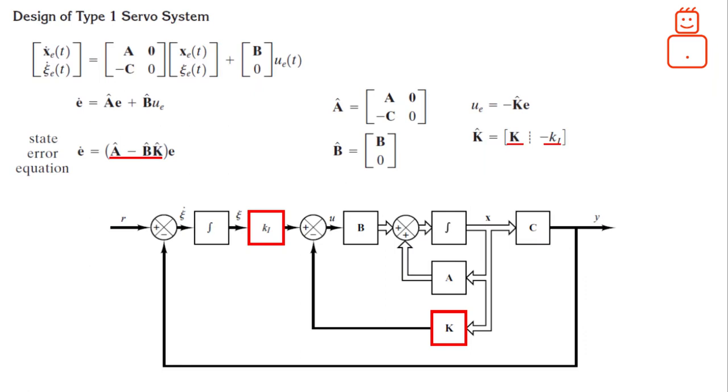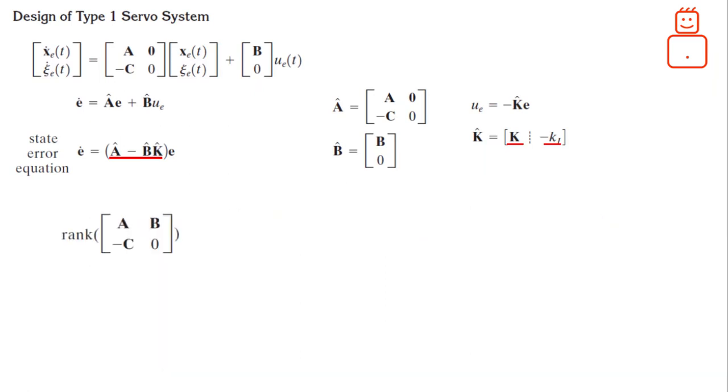However, this step requires that the system of the error E dot is completely state controllable. Thus, we need to check the rank of the following shown matrix, which has to have a rank of N plus 1, where N is the number of states of the original process.